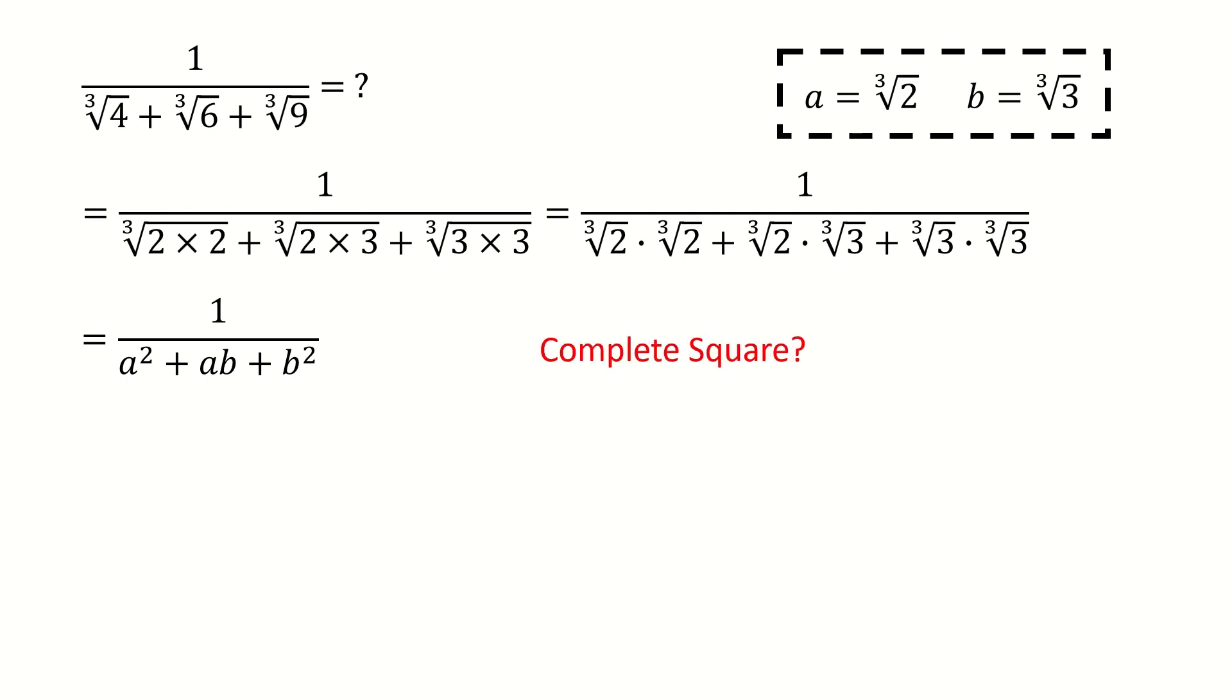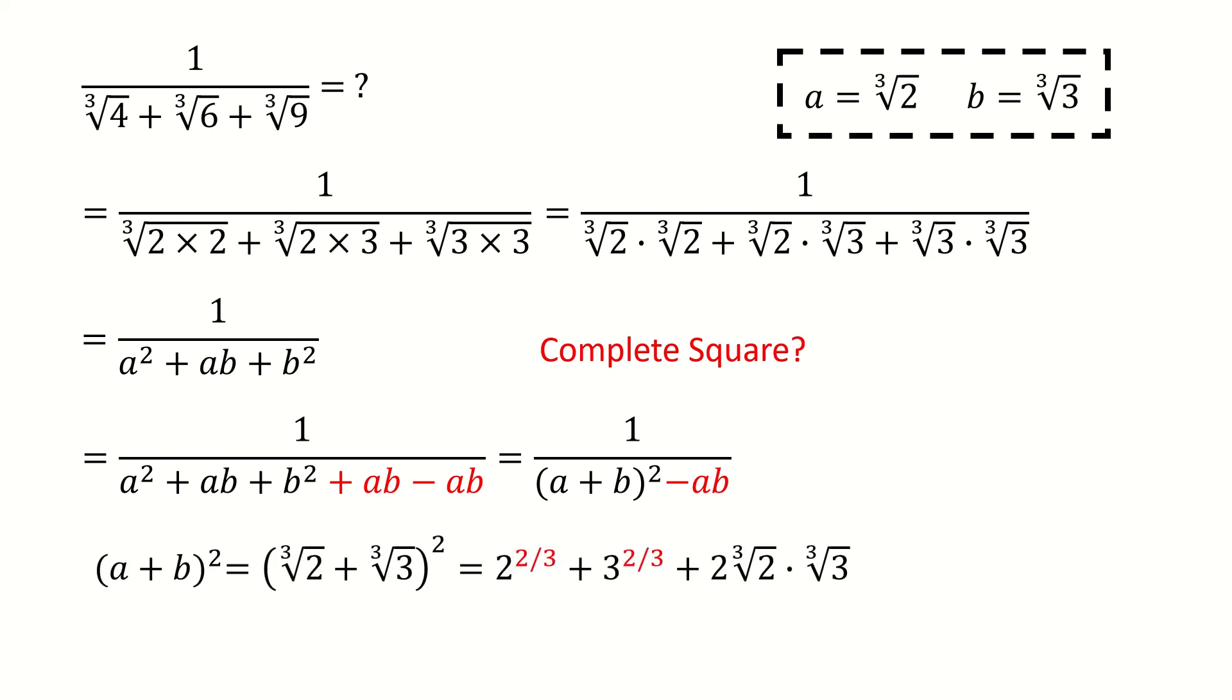Maybe you want to make a complete square. Let's try that. So we add ab and subtract ab. Then we can make the complete square. But this trick doesn't help us at all. Because if we plug in numbers, for example, if we expand the a plus b square, then we got this result. So we have all fraction power index here, such as 2/3 or 1/3. Actually, this attempt makes this problem more complicated. So it doesn't work. We have to try other methods.